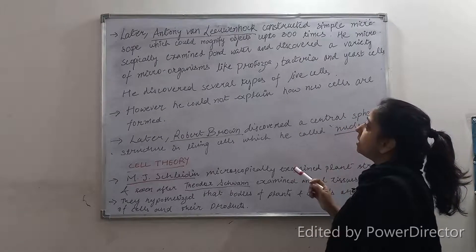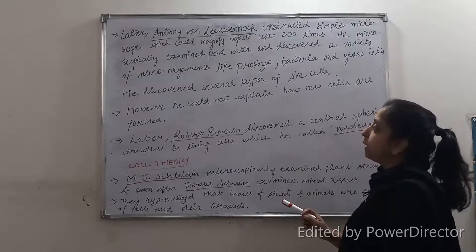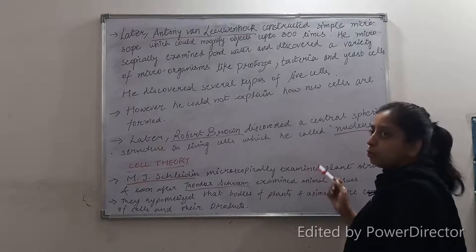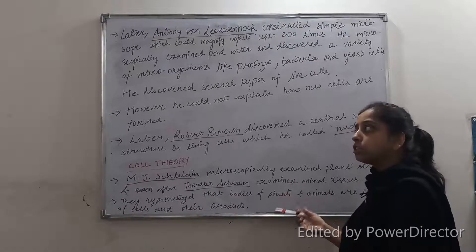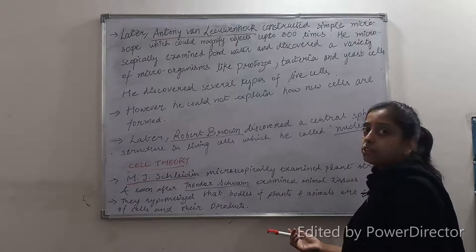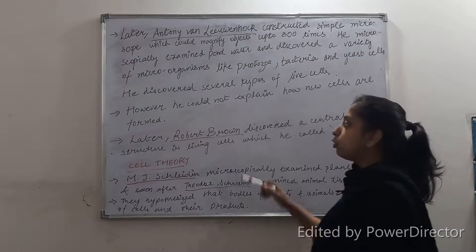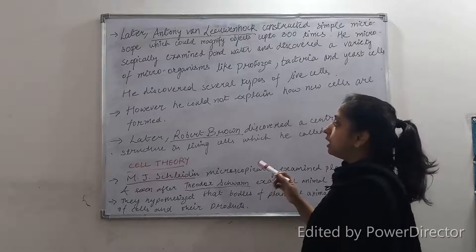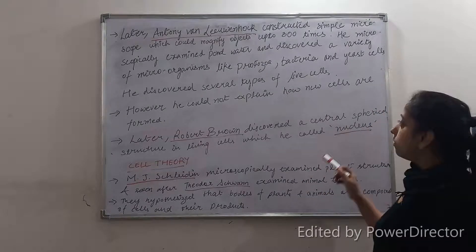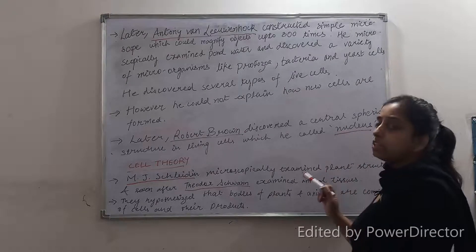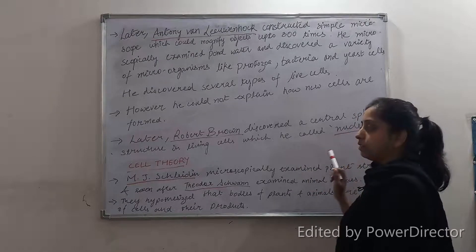He discovered the cell and he discovered several types of blood cells. However, he could not explain how new cells are formed — that is, he could not explain how cell division took place and how new cells are formed from pre-existing cells. Later, Robert Brown studied a number of tissues and discovered a central spherical structure in the living cells which he called the nucleus.